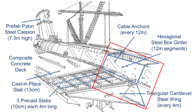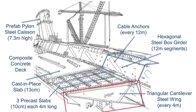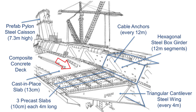The long hexagonal steel box girder was prefabricated in 12-meter segments and then transported to the site to be assembled. Triangular cantilevered steel wings were then welded perpendicular to the steel box girder, spaced 4 meters apart. Each pair of adjacent steel wings supported a precast one-way concrete slab, which served as formwork for a cast-in-place slab on top. Shear connectors ensured composite action between the slabs.